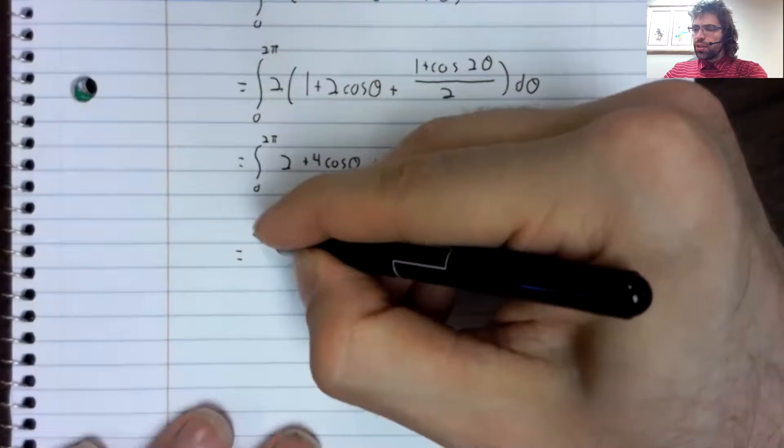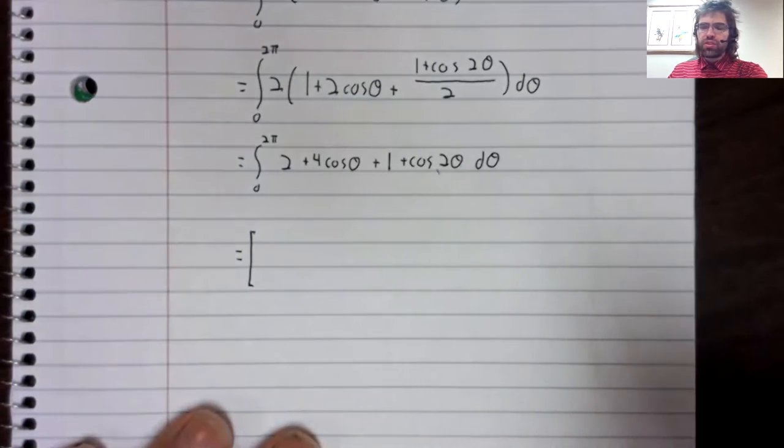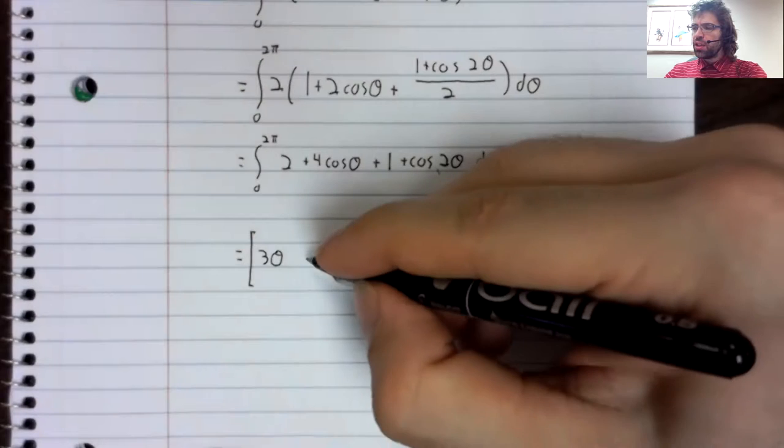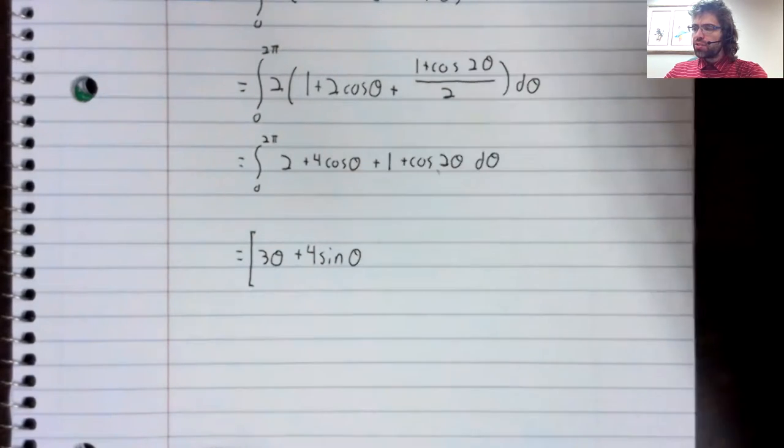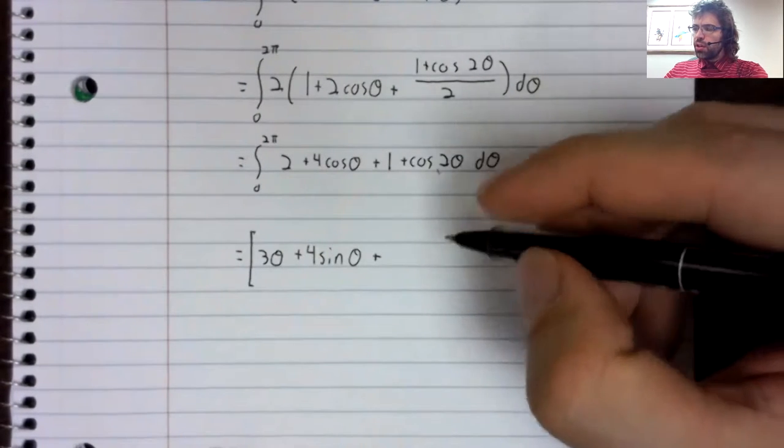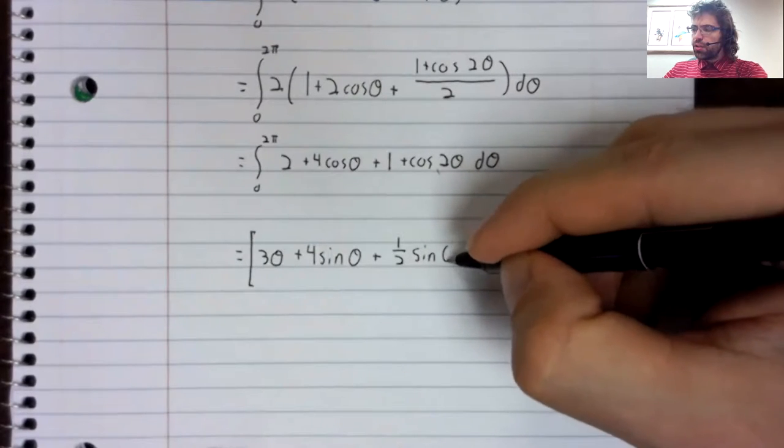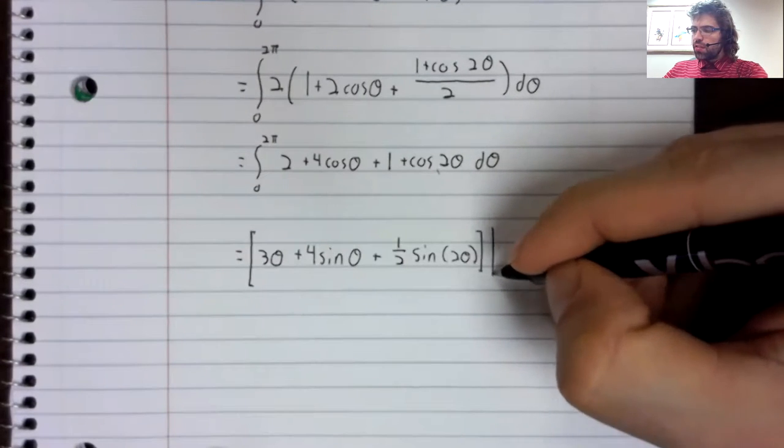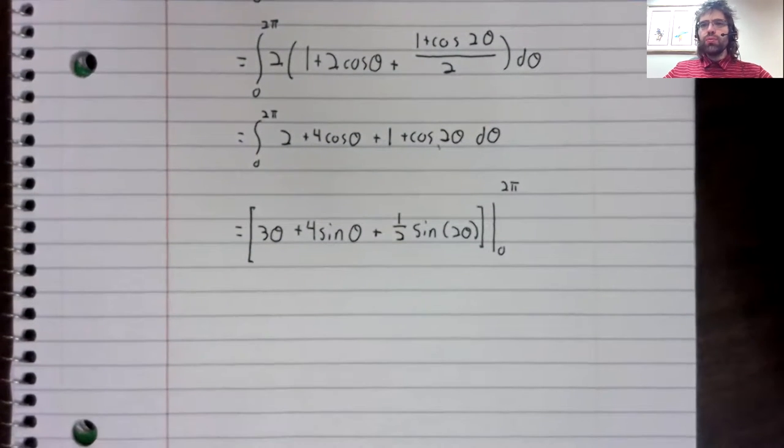So this two and this one give us three. The antiderivative of three is three theta. The antiderivative of the cosine is the sine. Here we'll have one half the sine of two theta, evaluated from zero to two pi.